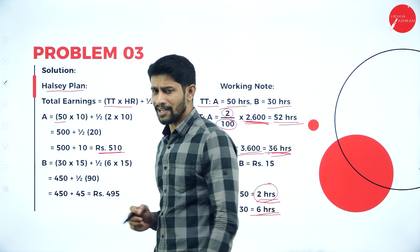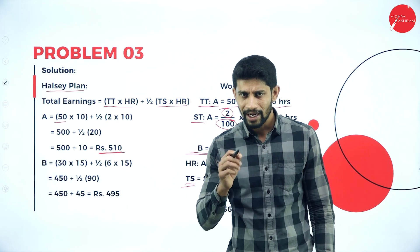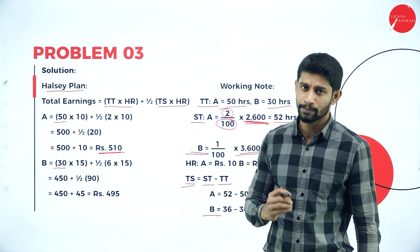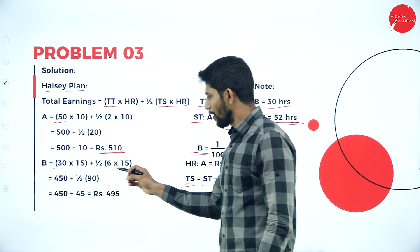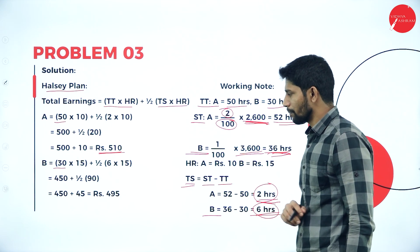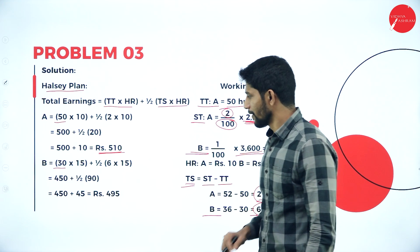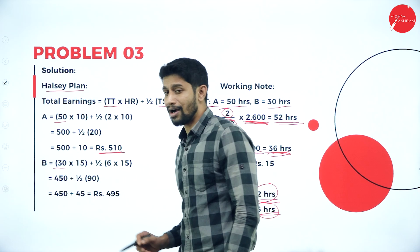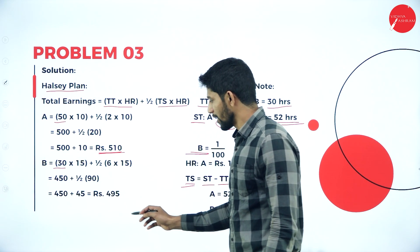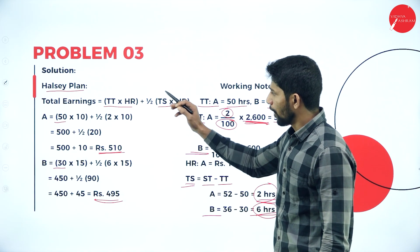For worker B, same formula: time taken × hourly rate + half of time saved × hourly rate. Time taken is 30 hours × 15 rupees per hour plus half of time saved 6 hours × 15 rupees per hour = 450 plus 45 = 495 rupees is the total earnings of worker B under Halsey plan.